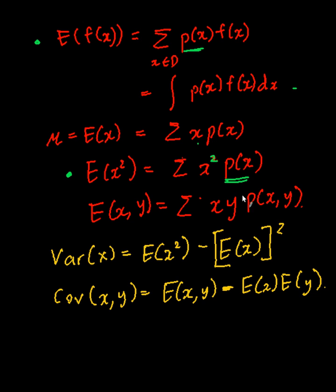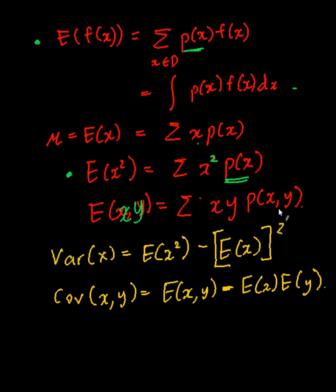For the expectation of x and y combined — the expectation of x times y — that's going to be x times y times the probability of x and y occurring together.